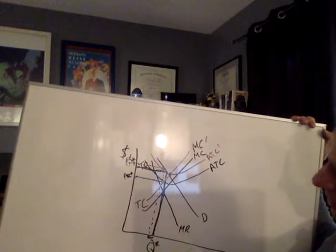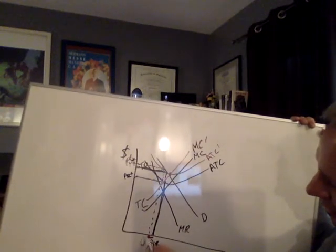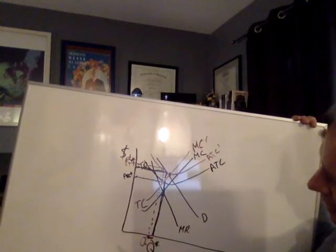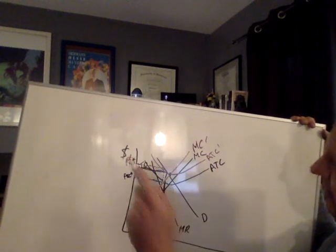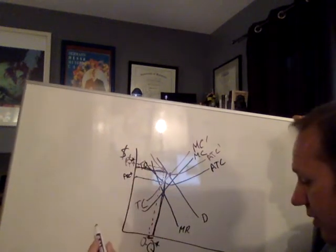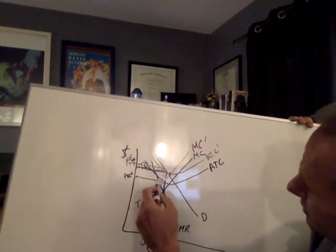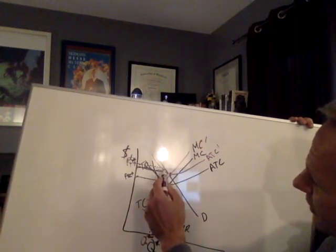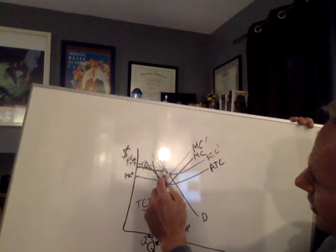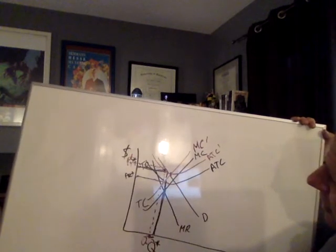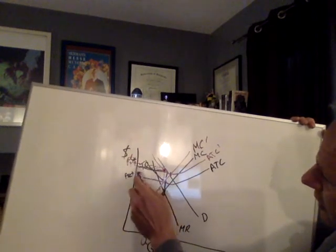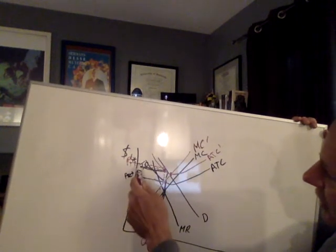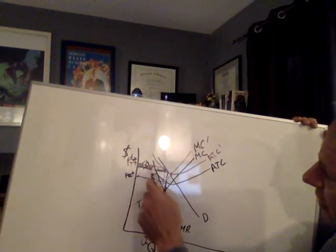Let's see if we've answered everything. What would likely happen to the monopolist's price? We got it there in purple, it would go up. The monopolist's output rate? It would go down. And the economic profit? My cost per unit is now here.